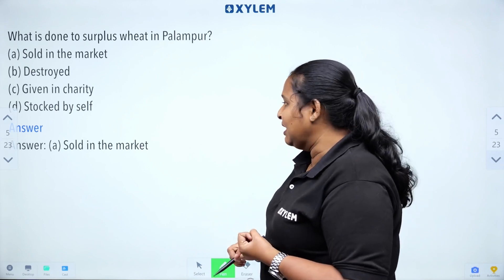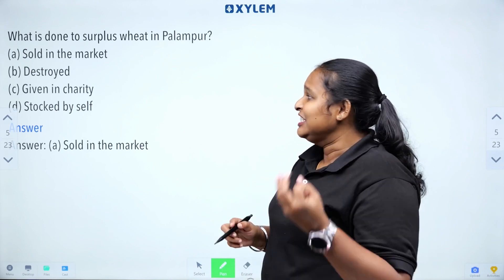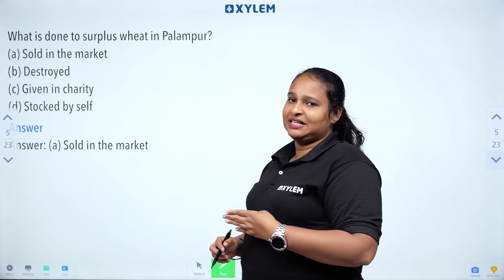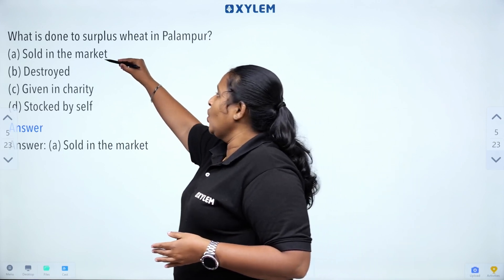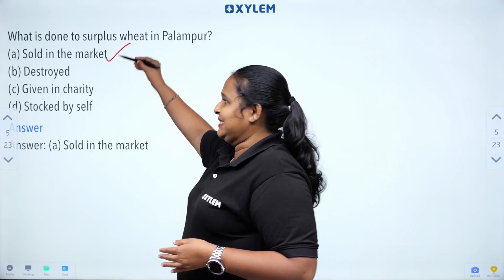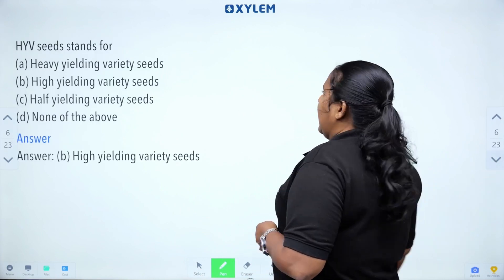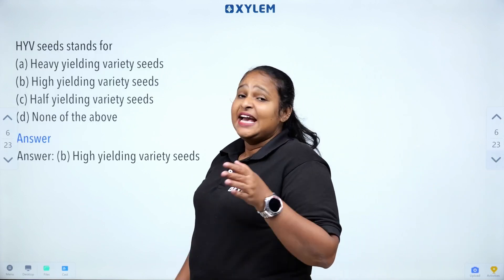What is done to surplus wheat in Falambo? The options are: sold in market, destroyed, given to charity, or stocked by self. What is the correct answer?